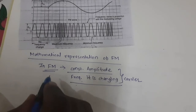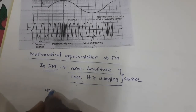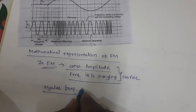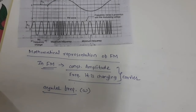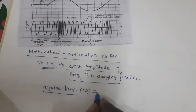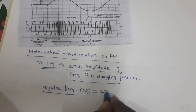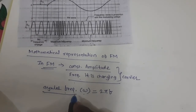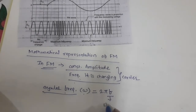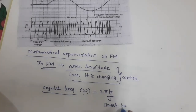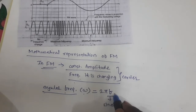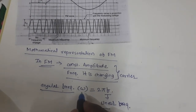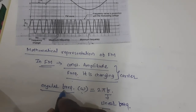One more term we have to discuss here is angular frequency. Angular frequency is always represented with the symbol omega. Mathematically, we can write omega equals 2πf. Omega is nothing but your angular frequency or angular velocity, while f is your linear frequency. Whenever we label frequency as f, it indicates linear frequency; if we represent it by omega, it is angular frequency.